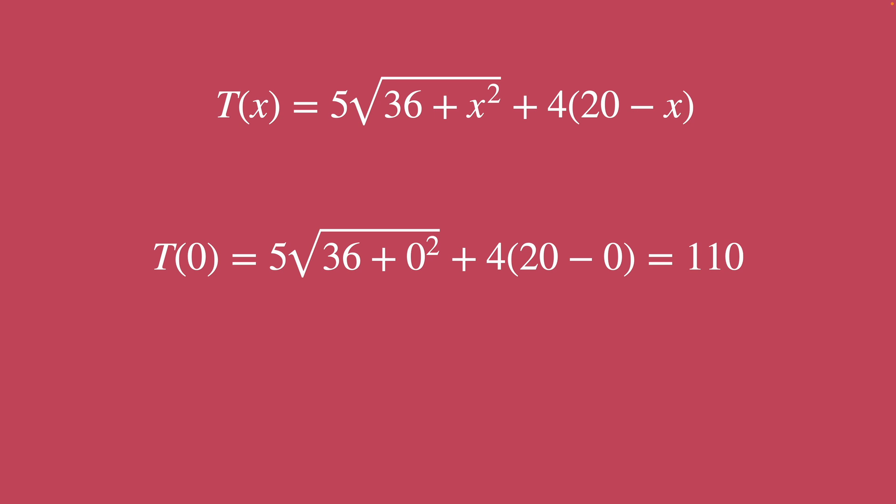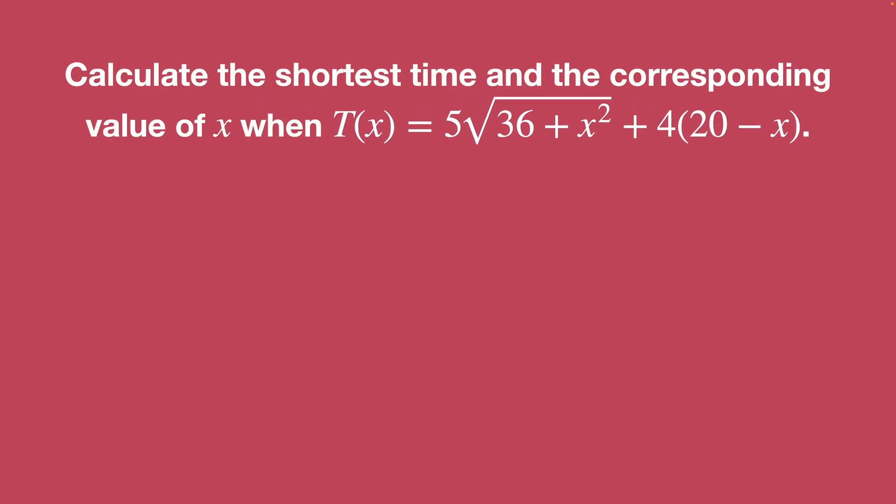And so our last question was just asking us to find the shortest time to get to the zebra. And so that's really just a minimization problem. So we can just take the derivative of the time equation with respect to X.